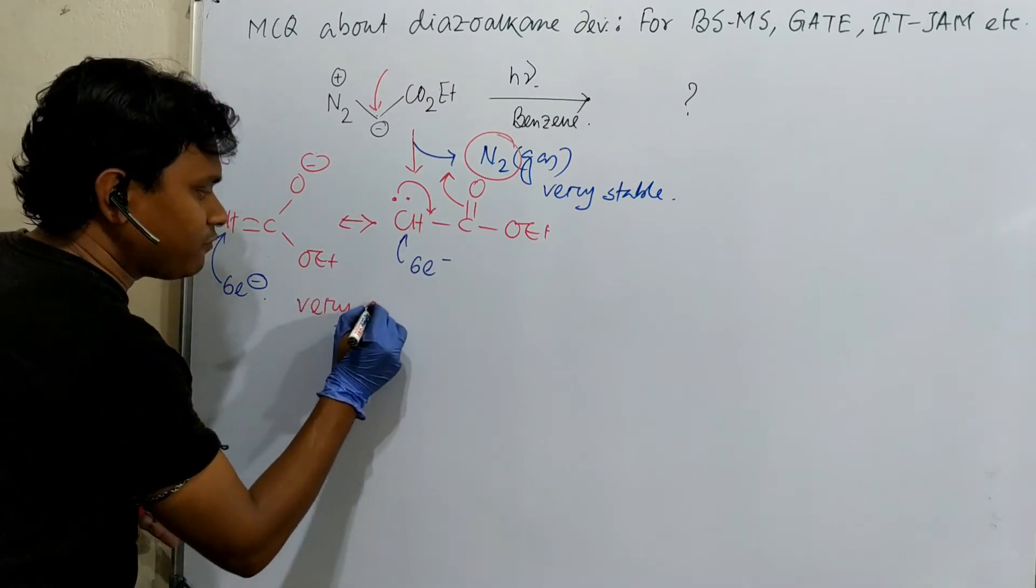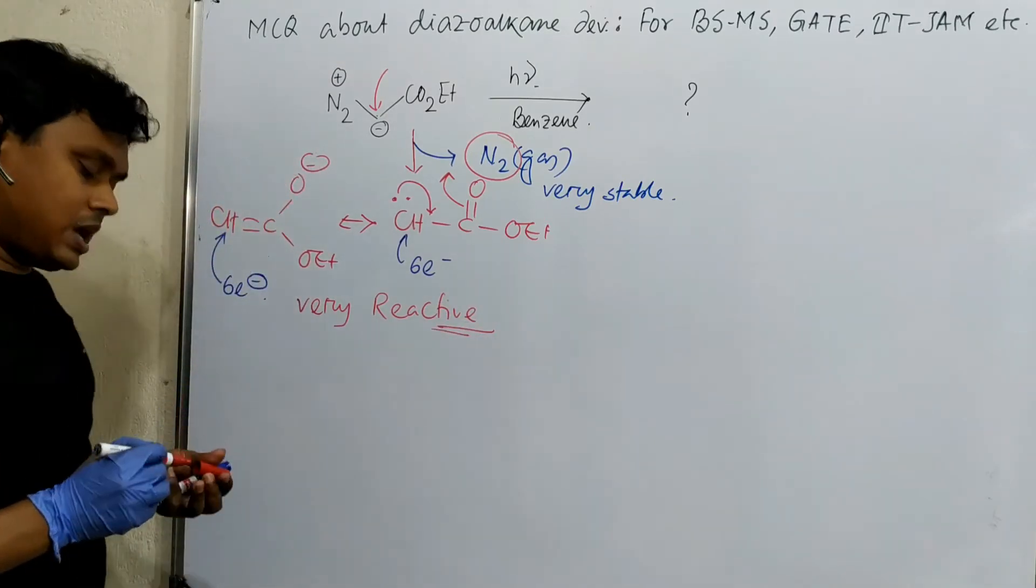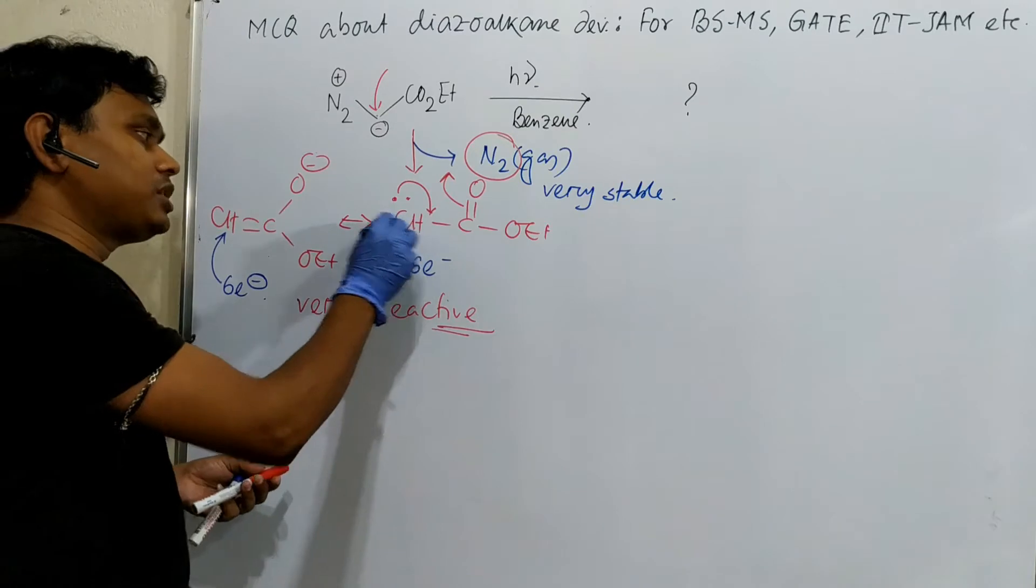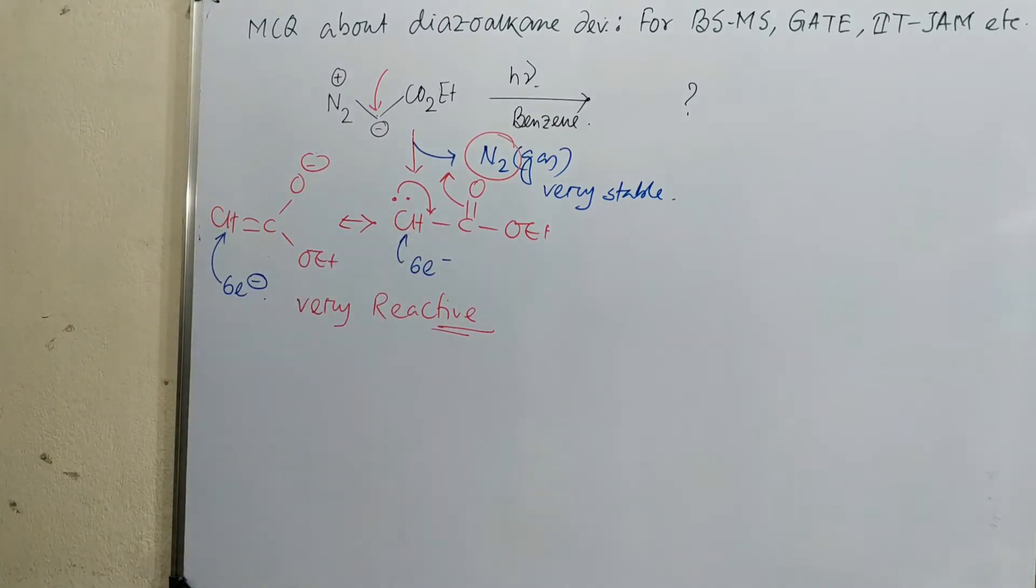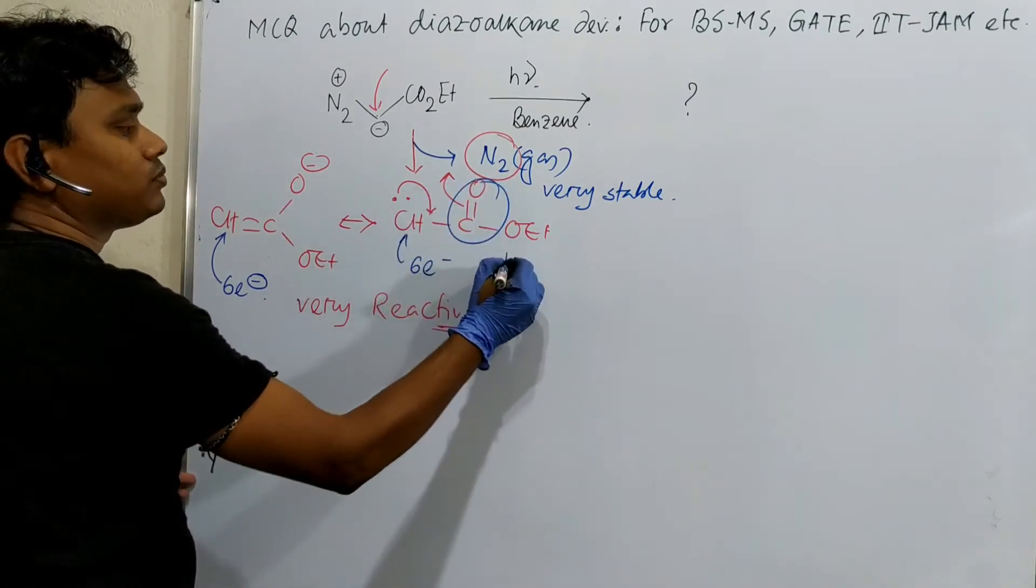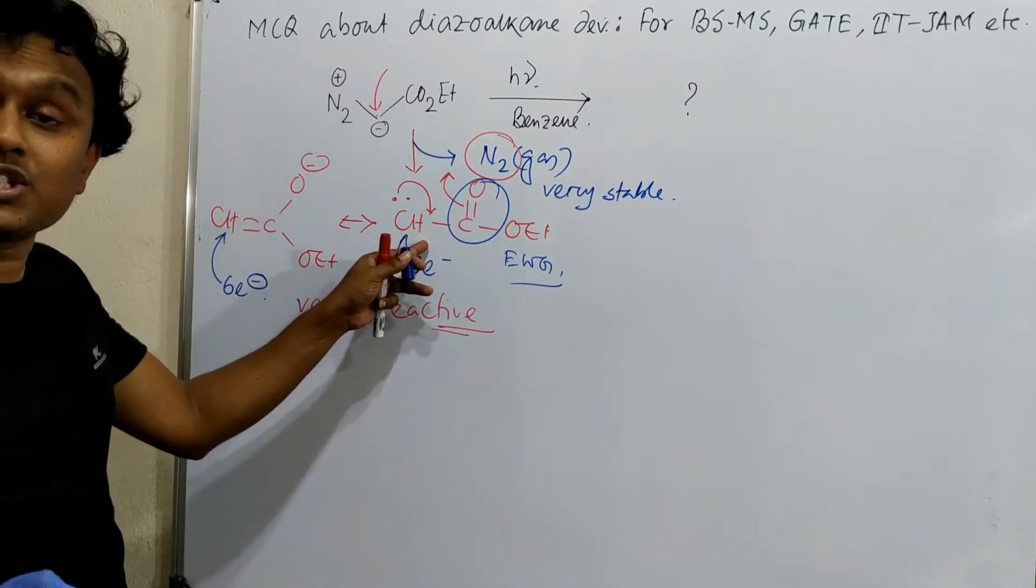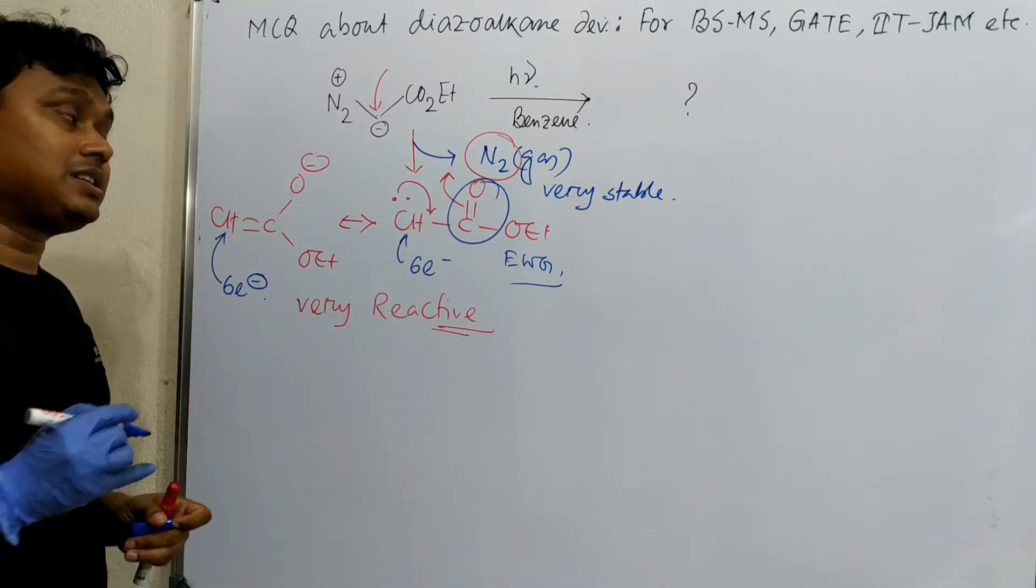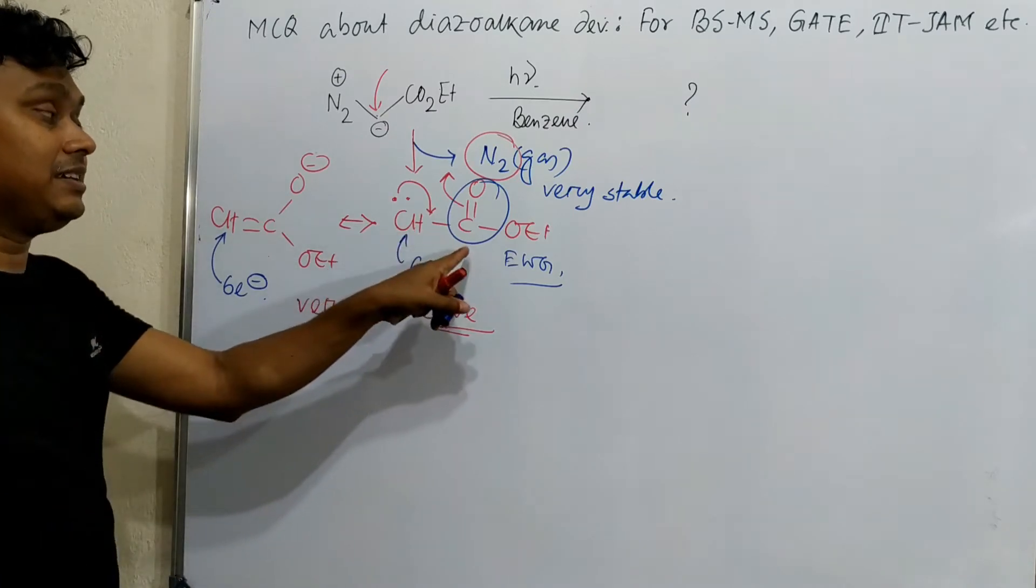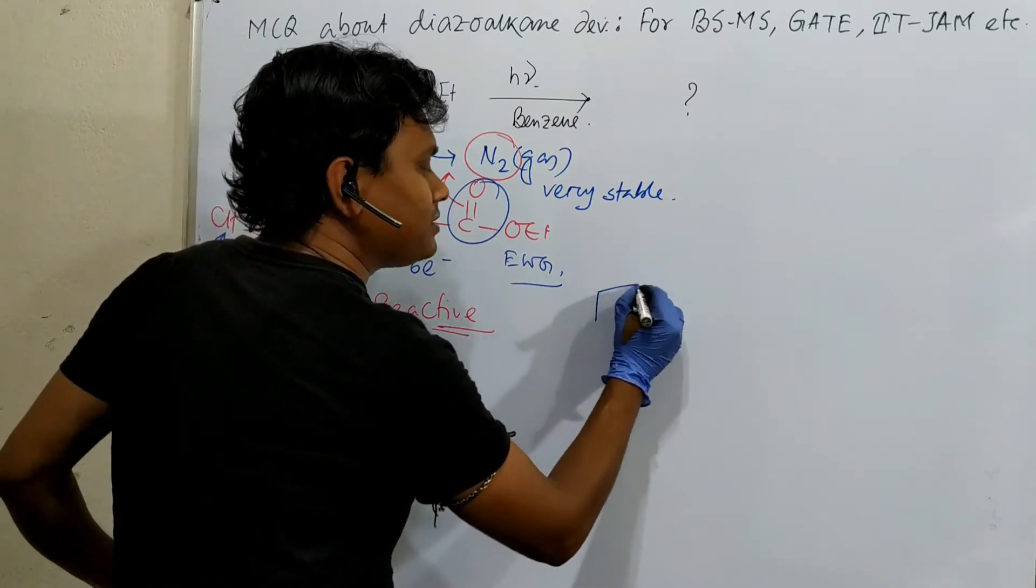Why very reactive? Now the question. First of all, what do we know? Along with an electron deficient carbon, if we attach some electron rich or electron donating group, it stabilizes. But in this case, what have we added? Electron withdrawing. Electron withdrawing. So what happens? It makes this carbon so much electron deficient. It's a 6-electron species. So first of all, it is deficient. Second, this withdrawing makes it desperate and it becomes so much desperate that it reacts with benzene.